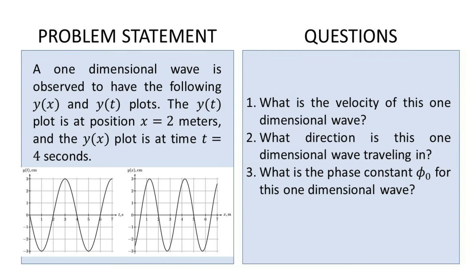Here's the problem — feel free to pause it and copy it down if you want to follow along. A one-dimensional wave is observed to have the following y(x) and y(t) plots. The y(t) plot is at position x equals 2 meters, and the y(x) plot is at time t equals 4 seconds. We want to answer: what is the velocity of this wave, what direction is it traveling, and what is the phase constant phi naught?